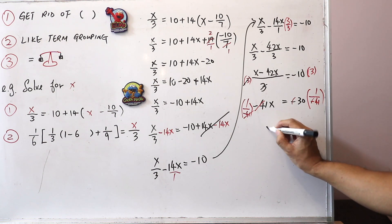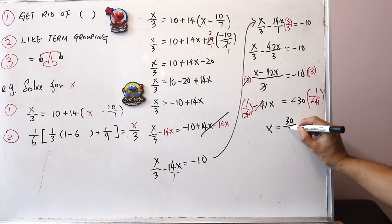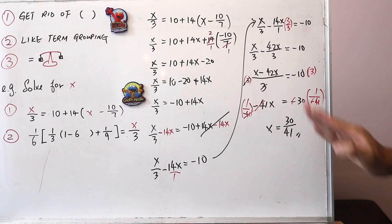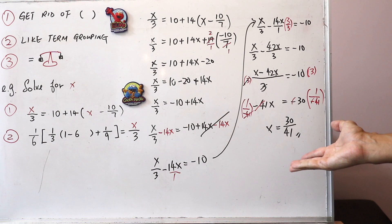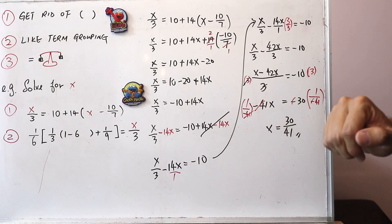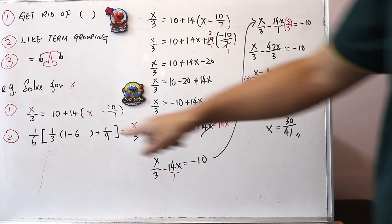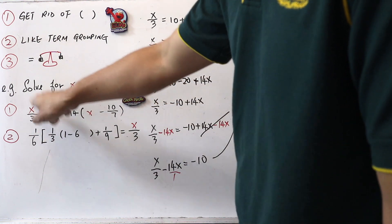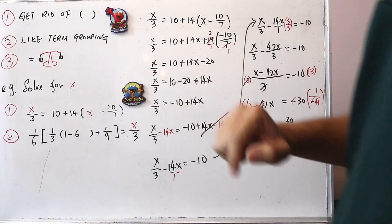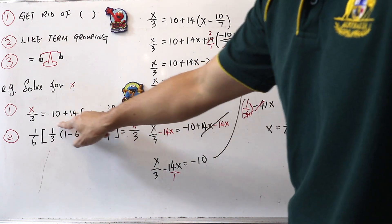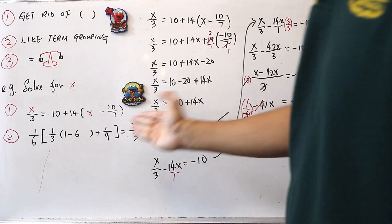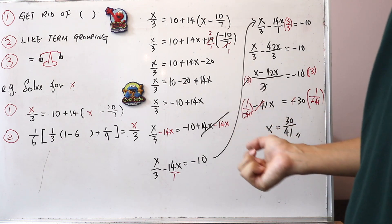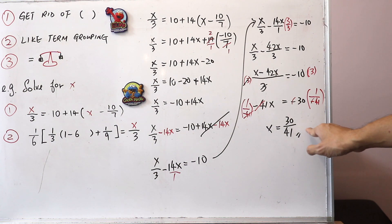The answer is x equals 30 over 41. If you're unsure whether this answer is correct, you can verify it — depending on whether your teacher allows a calculator. Plug in 30 divided by 41 into the left-hand side expression and divide it by 3, record that number. Then plug in 30 divided by 41 into the right-hand side and compute it. If both results are equal, then x equals 30 over 41 is confirmed to be correct.